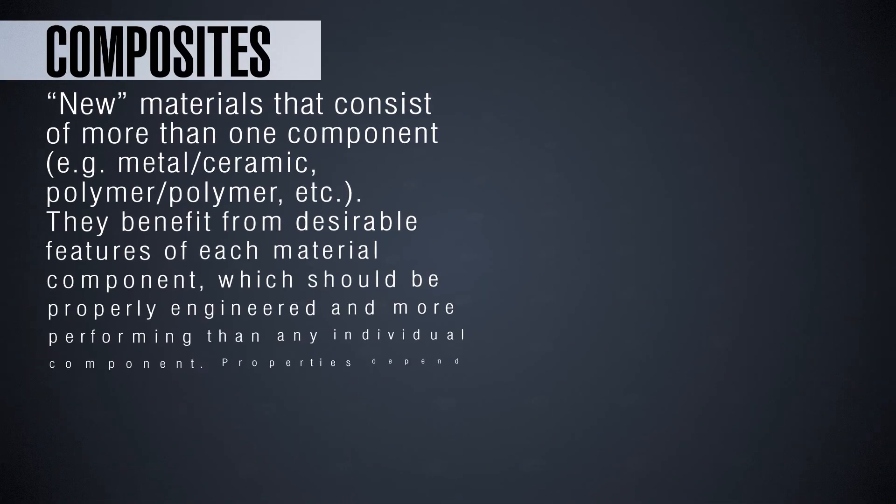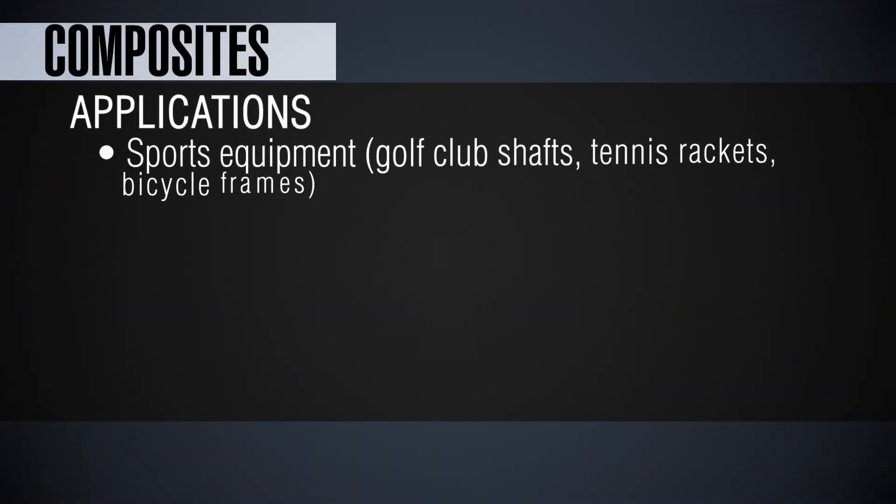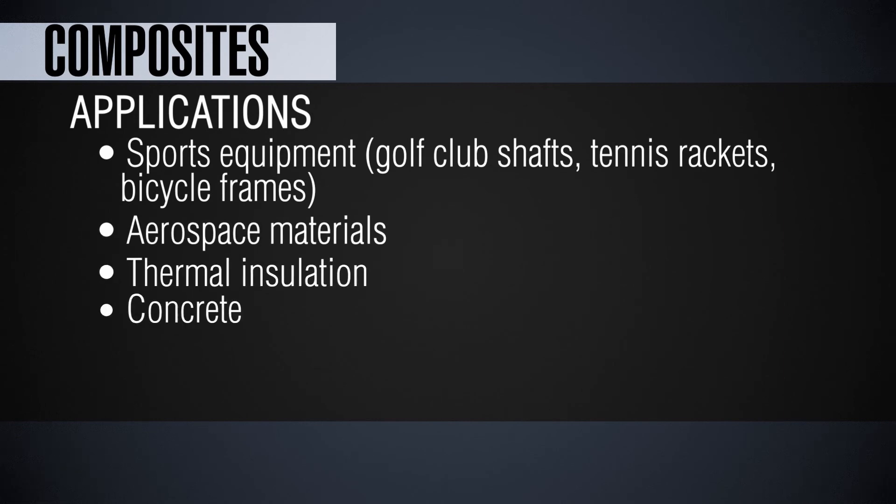Let's go now to the composites. So what are the applications for the composites? We may think of any kind of object that requires higher engineering properties. So for example, we may think of a sports application. Golf clubs, shafts, for example, require extremely high elasticity in order to transfer in the most efficient way the energy from the club to the ball, of course. So certain kind of materials and composite structures were used.